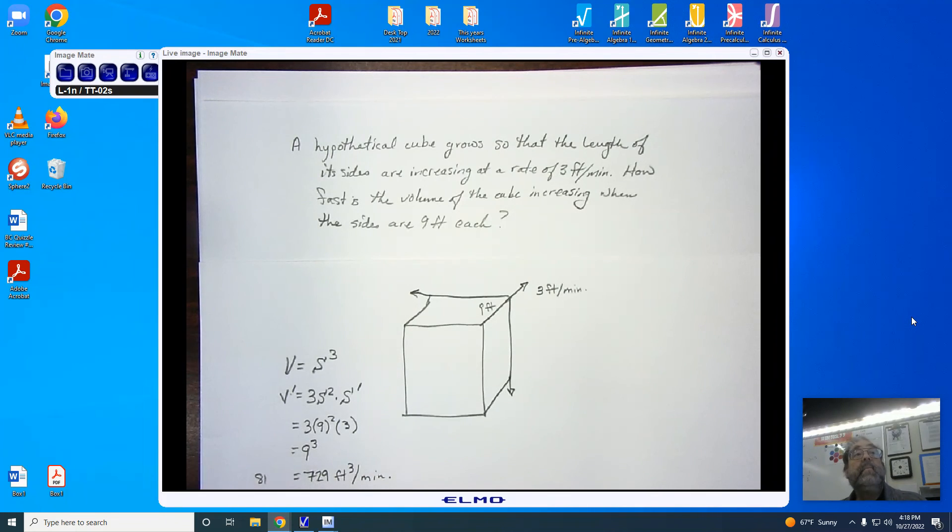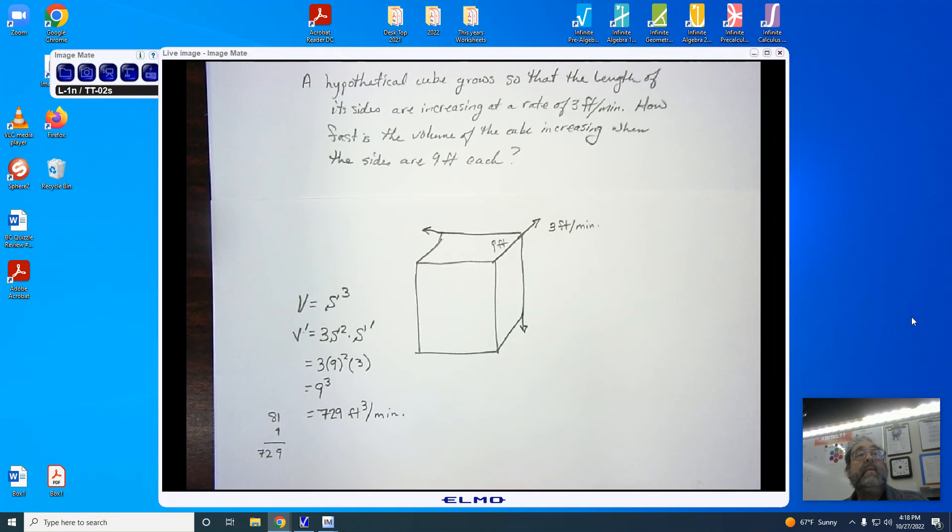And there is my process for finding the related rates. In this case, we had a change in volume. We had a change in area.